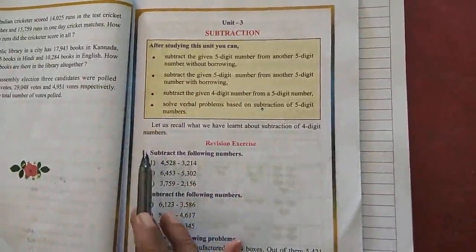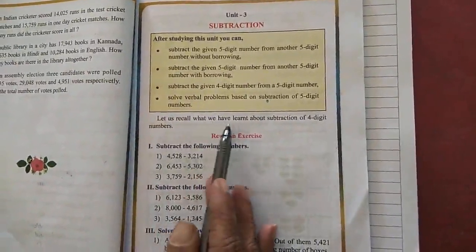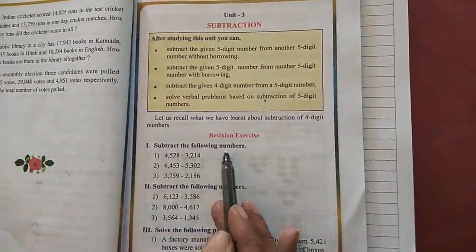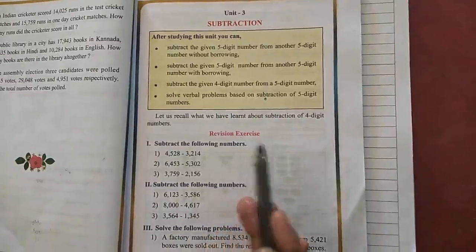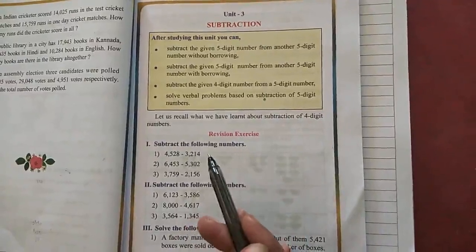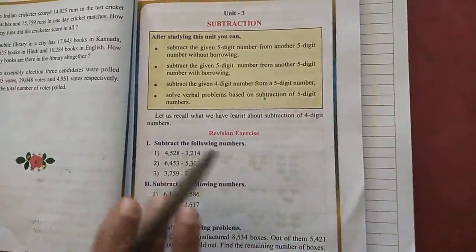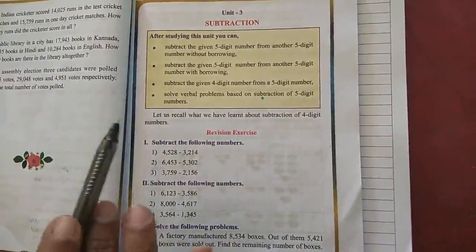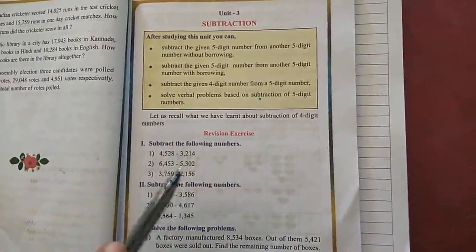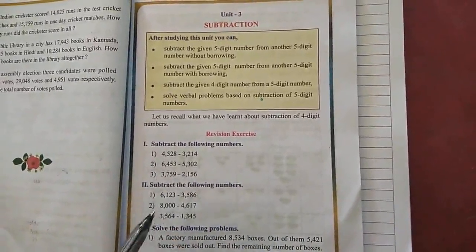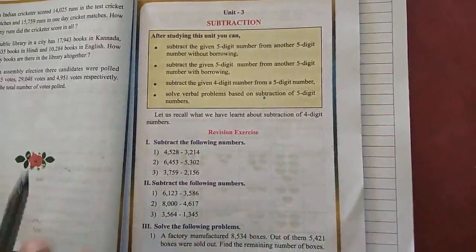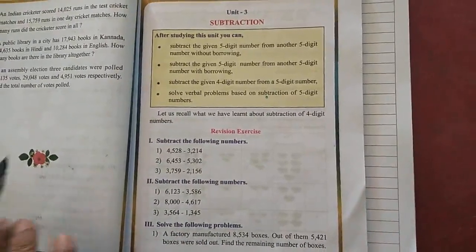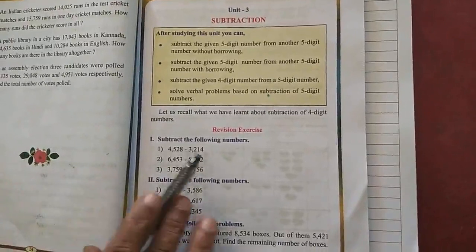Now we can go to the lesson. Recall what we have learnt about subtraction of 4-digit numbers. According to the place value — that is ones, tens, hundreds, thousands — we are going to start subtraction from the ones place only, going from right to left. Now open page number 25 in your textbook.